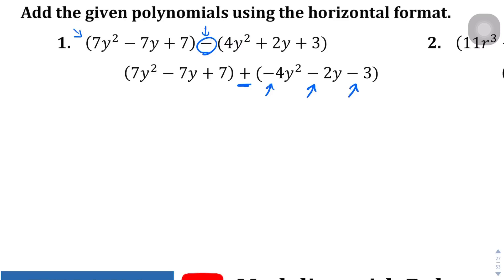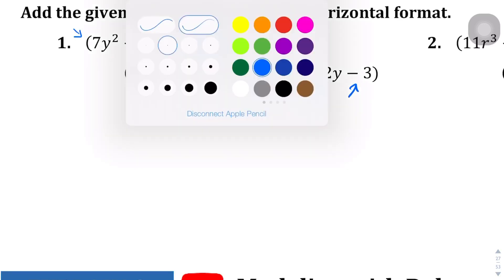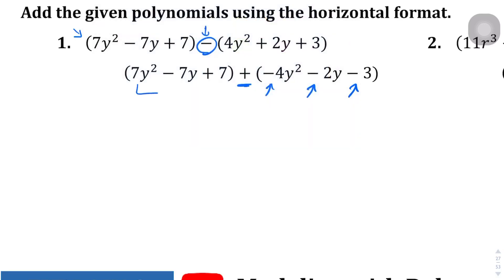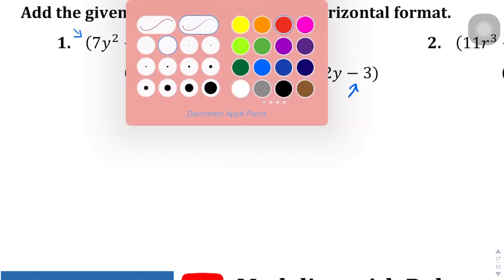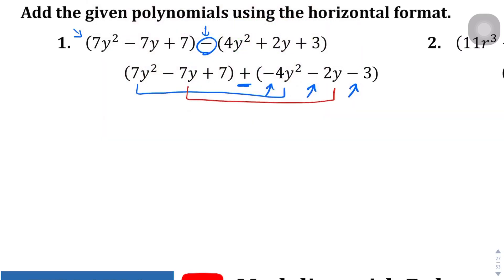Let's go ahead and color code these and draw lines to what we're going to be matching up. We're already in blue, so we're going to match up those y squareds, and then this singular y, and lastly the constants. Let's deal with the blue first — the y squared. So 7y squared and negative 4y squared is going to become positive 3y squared.